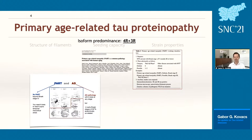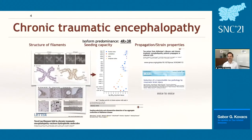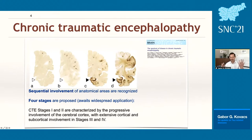Primary age-related tau proteinopathy (PART) is a mixed 3R/4R tauopathy that looks like Alzheimer's disease but without amyloid-beta; the tau is usually restricted to the medial temporal lobe, since if tangles appear outside that region amyloid-beta is invariably present. Chronic traumatic encephalopathy (CTE) is an increasingly recognized disorder in contact sports and after mild traumatic brain injury. It has a distinct tau fold, data on seeding capacity, and distinctive experimental propagation patterns. Neuropathology shows perivascular, patchy accumulation of neuronal and astrocytic tau at the depths of sulci, with a staging and sequential involvement as described by Ann McKee in 2013. CTE frequently associates with other proteinopathies and is also discussed as a complex neurodegenerative condition.